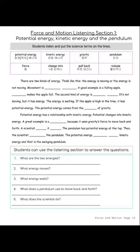There are two kinds of energy. Think like this: the energy is moving, or the energy is not moving. Movement is kinetic energy. A good example is a falling apple. Gravity makes the apple fall. The second kind of energy is potential energy.